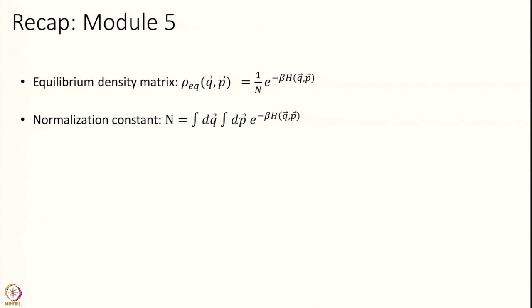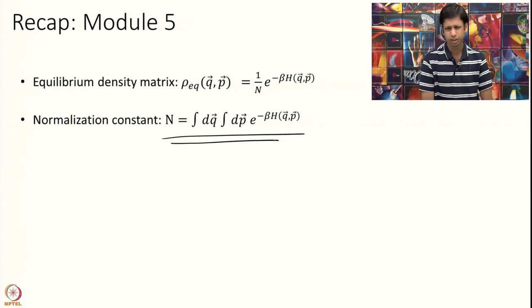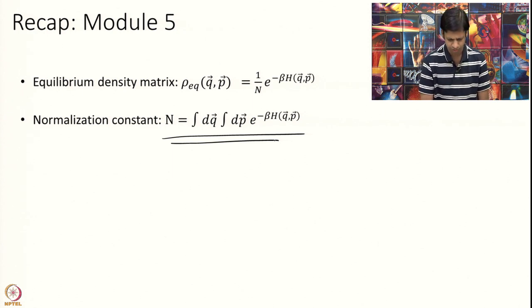We will recap something from 10 modules ago where we derived that at equilibrium, the classical density matrix looks like (1/N) × e^(−βH), and the normalization constant N equals the phase space integral of e^(−βH). You can go back to that module where we derived this partial derivation in phase space.